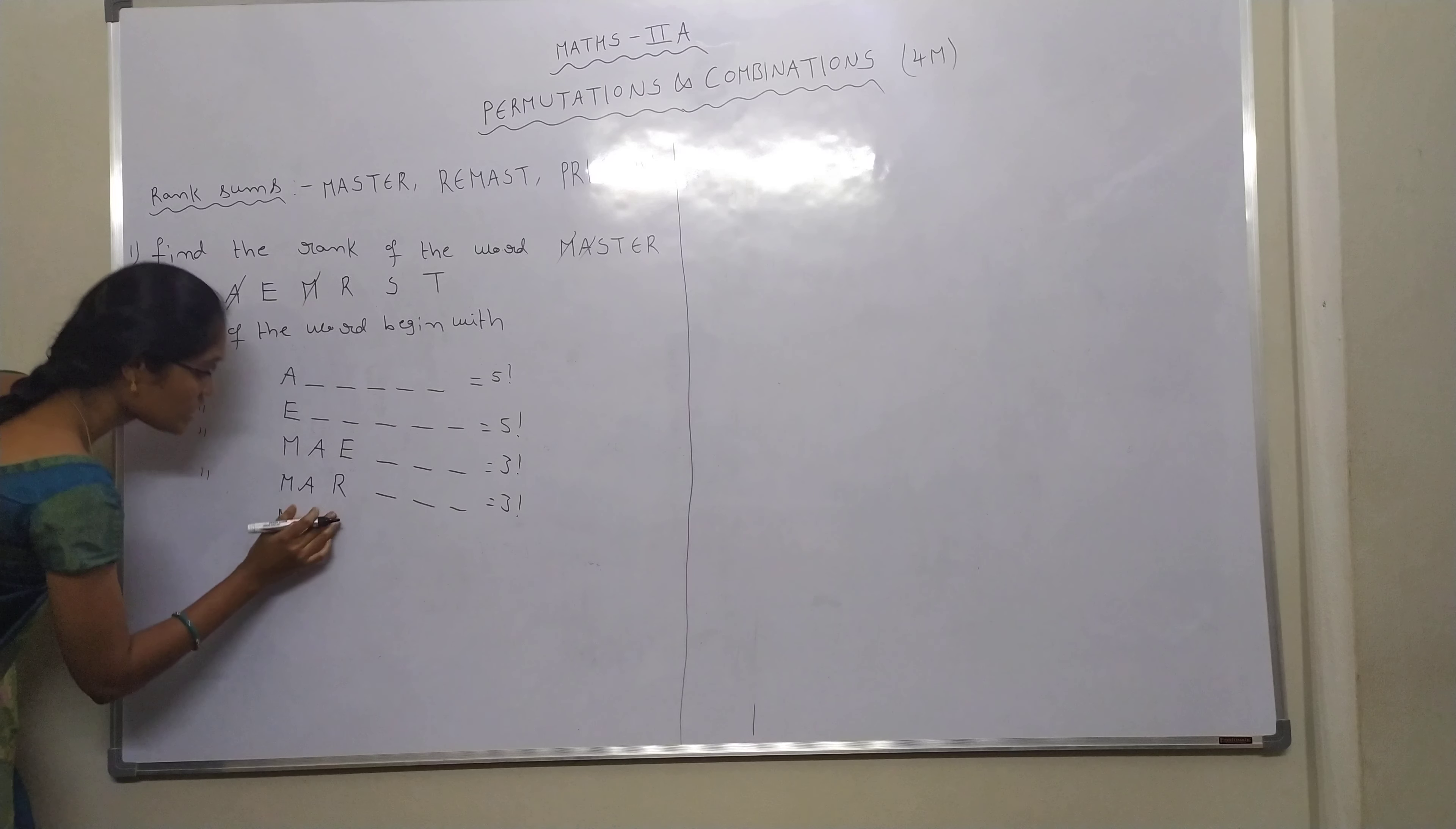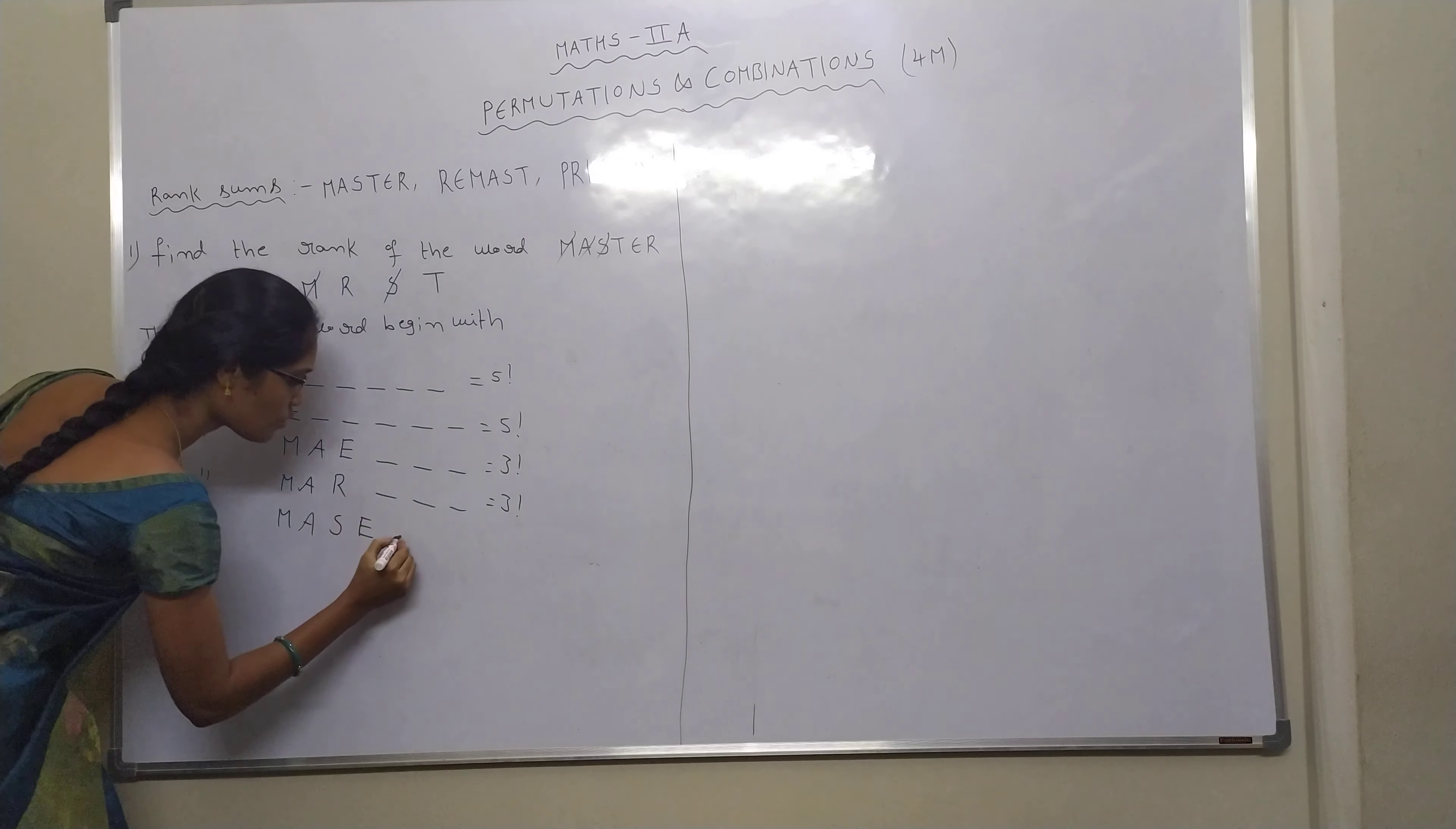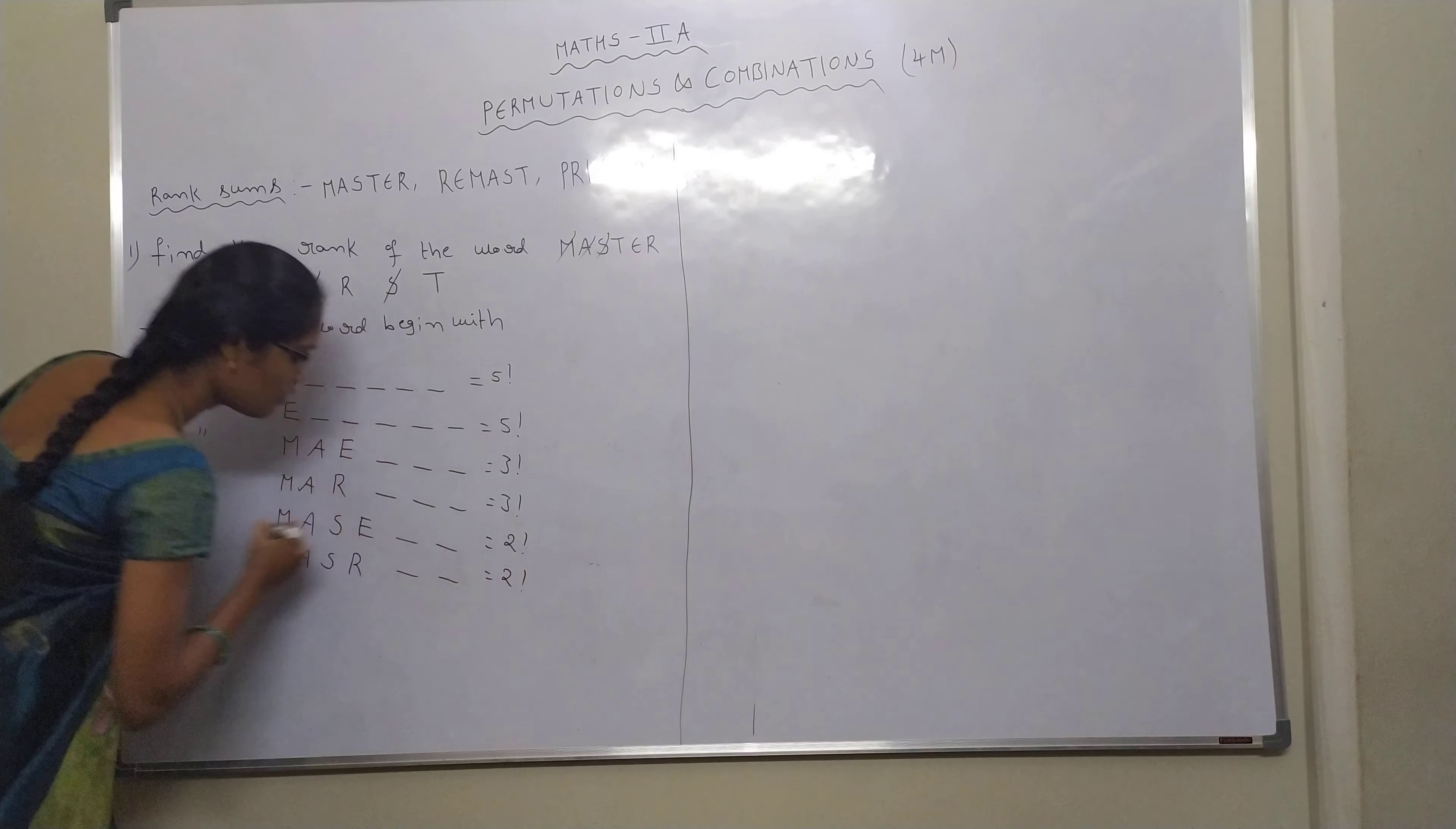Next, check the letter R. Next order, we need S. So S we need, cancel. Again dictionary order. Come to first letter E. We need E, so one, two, that is equal to two factorial. Next M A S, check the next letter. Instead of E, R. M A S R, R we need. One, two, that is equal to two factorial.